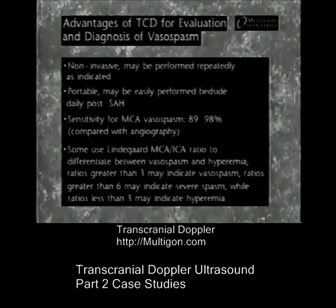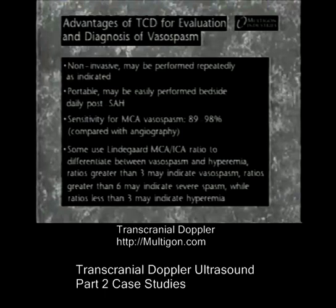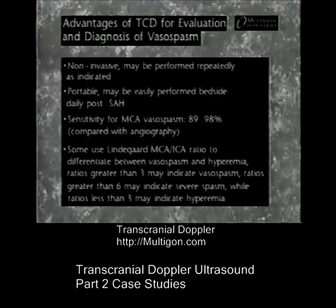Significant increases in TCD mean flow velocities are also seen in vasospasm following subarachnoid hemorrhage. TCD is particularly useful as it may be performed bedside without the use of contrast agents, and daily serial studies may be performed as indicated. Some clinicians use the Lindegard ratio to differentiate between vasospasm and hyperemia, both of which produce elevated mean flow velocities. This ratio compares MCA velocity to velocity in the proximal ipsilateral ICA.